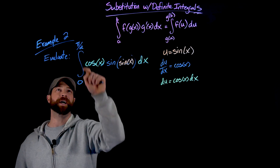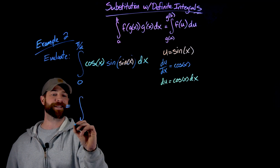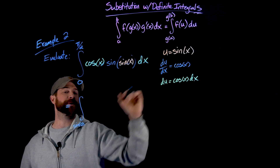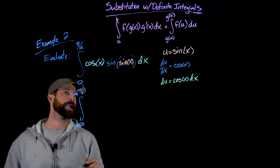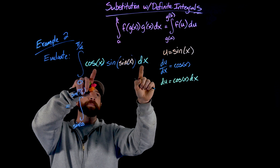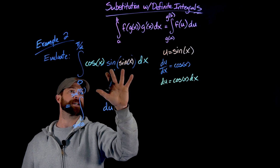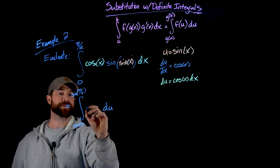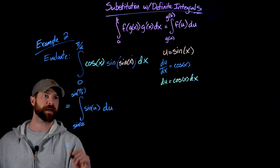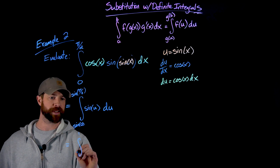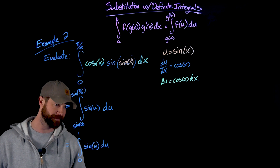Now making the swap and taking care of the bounds first. The lower bound becomes sine of 0, and the upper bound becomes sine of pi over 2. Swapping out cosine x dx for du and the inner sine of x for u gives the integral of sine of u du. Evaluating the bounds: sine of 0 is 0 and sine of pi over 2 is 1, so we integrate from 0 to 1.